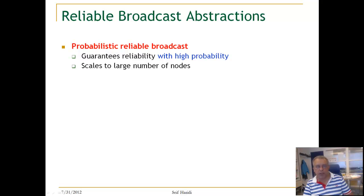The abstraction that we just mentioned are only for a small number of processes. You will see this when we look at the complexity of the broadcast algorithms. We will also end by looking to another broadcast abstraction called Probabilistic Reliable Broadcast. This abstraction guarantees the reliability of message delivery with high probability. We will see what this means later, but it can scale to a large number of nodes in the system.